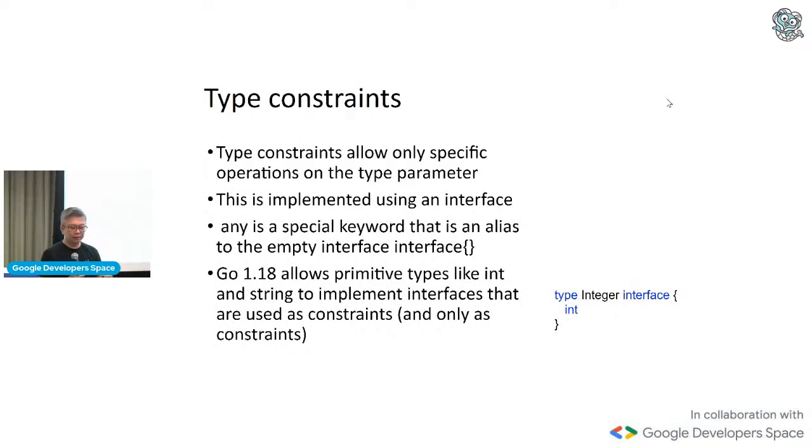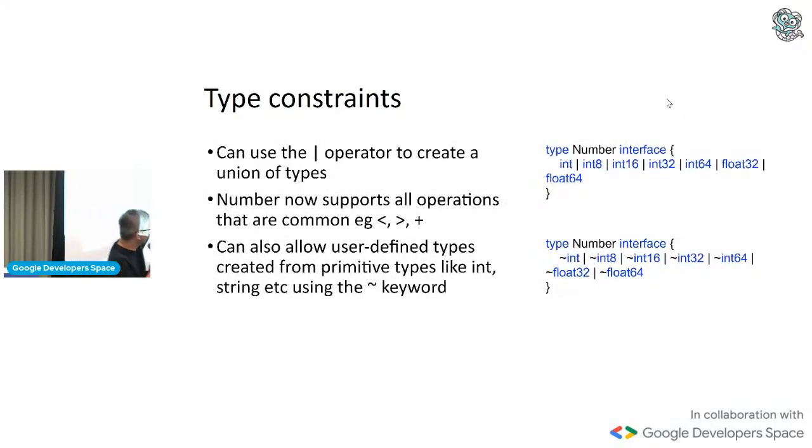So a bit more wordy. Type constraints allow only specific operations on the type parameter. And this is implemented using an interface. So constraints are actually interfaces. And any is a special keyword that's an alias for the empty interface. Okay? You could actually create an interface with a primitive type like int. But you could also union them using the vertical bar operator to create union of types, which means that it can represent any of these ones. And then you have this little squiggly tilde. This means that any customized types that are based on these primitives are also part of the constraints. Okay? So this basically defines the type constraint. This is not that difficult. You have type parameters, and then you have type constraints. And constraints basically constrain the parameters. That is about it. Okay?